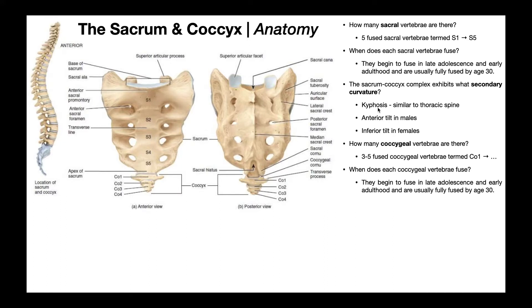It's also worth mentioning that in males, the sacrum is a little bit more anteriorly tilted, and in females it's a little bit more inferiorly tilted. Now, inferior to the sacrum, we have the much smaller coccyx.